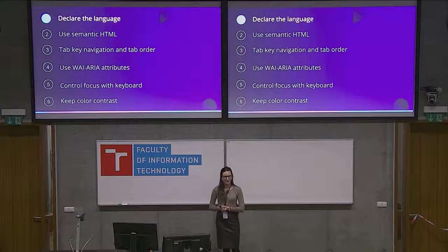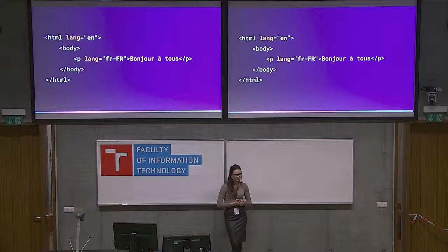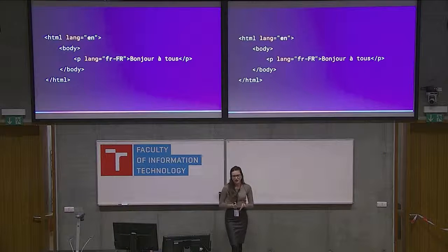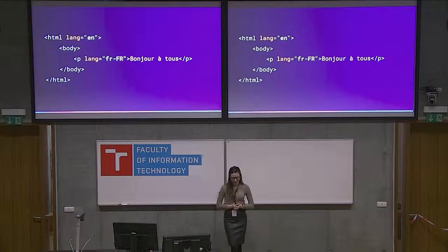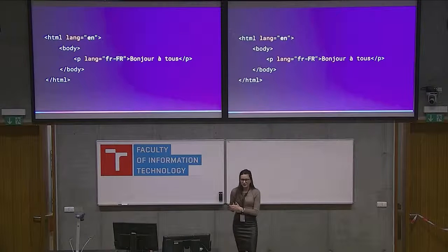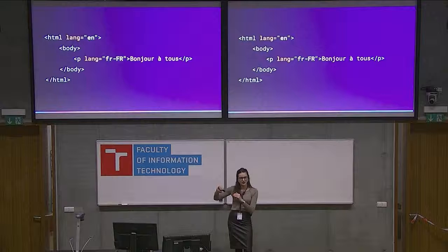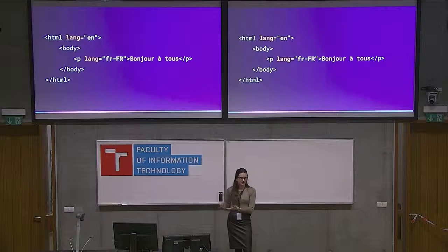The first core principle: declare the language. The 'lang' attribute is not only great for SEO or translation tools — it's also very valuable for assistive technologies. For example, if I add 'lang=fr' to a paragraph in French, when the screen reader reaches that paragraph, it will automatically switch to French and read it with the correct pronunciation.